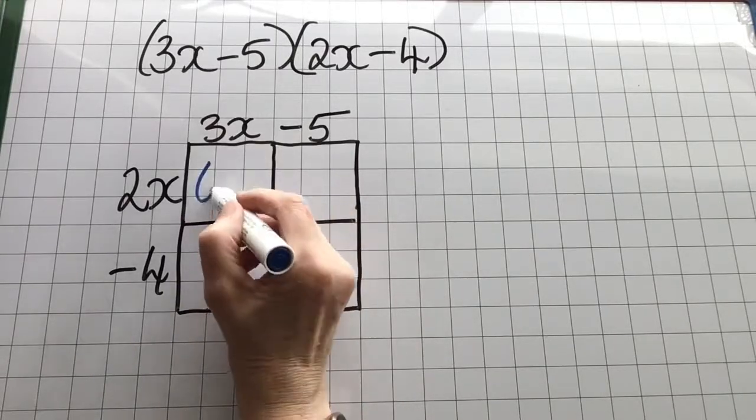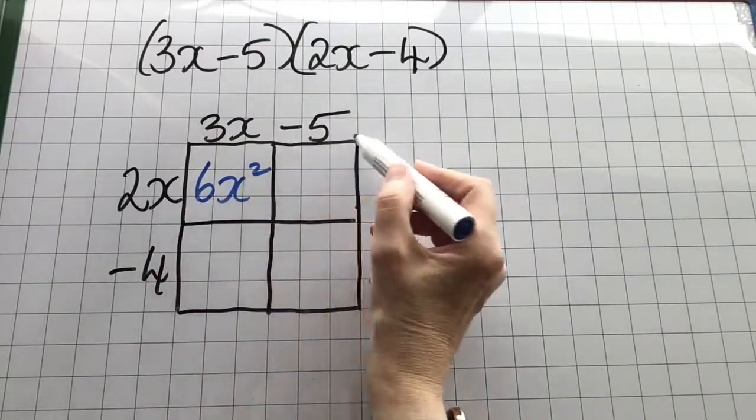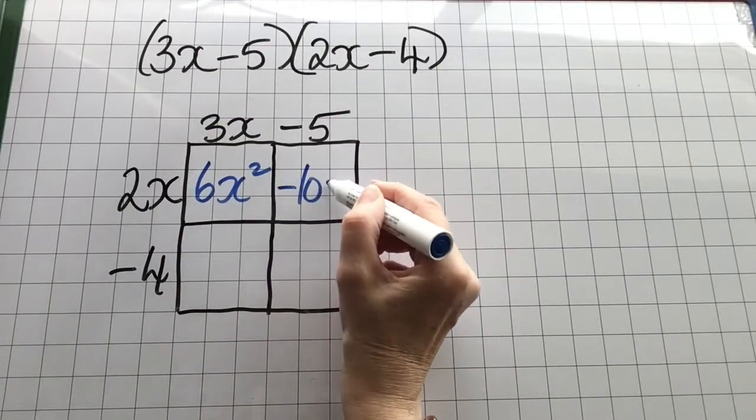2x by 3x: 2 threes are 6, x by x is x squared, so 6x squared. 2x by minus 5 is minus 10x.